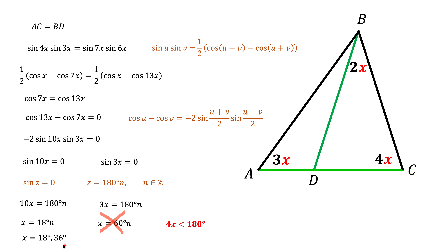Are both possible? Only one is correct. Looking at triangle ABC, the sum of angles A and C is 3x plus 4x equals 7x. The sum of two angles in a triangle must always be less than 180°, so 7x must be less than 180°. This condition eliminates x equals 36°, leaving the only possibility as x equals 18°. That is our answer.